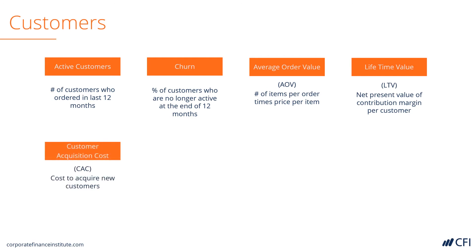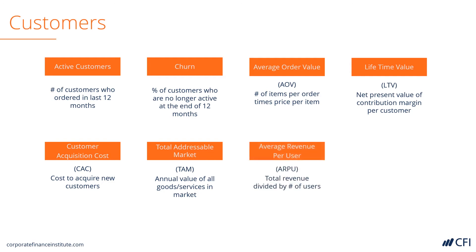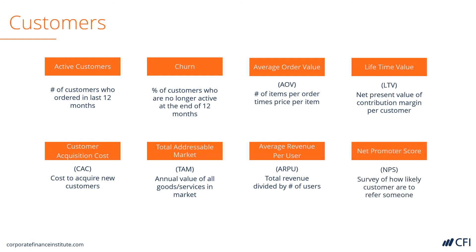Customer acquisition cost is the cost to acquire a new customer. The total addressable market is the annual value of all the goods and services in the market you are trying to address — this is very important for investors to gauge the size of the opportunity. Average revenue per user is revenue divided by number of users. And finally, net promoter score is a good indication of how happy your customers are with your business and their buying experience — it's conducted by survey.